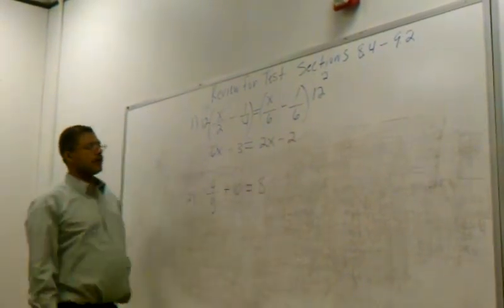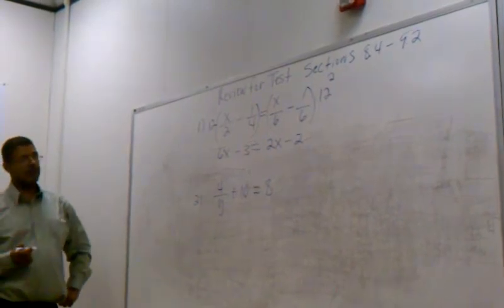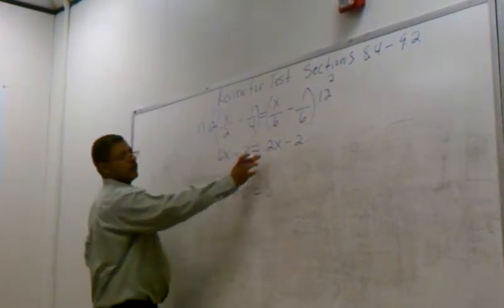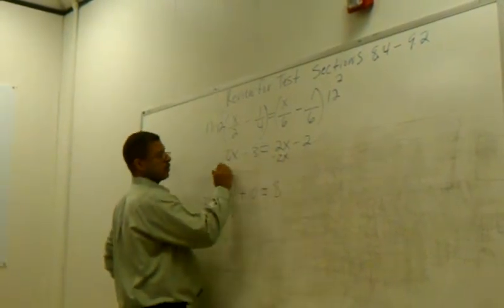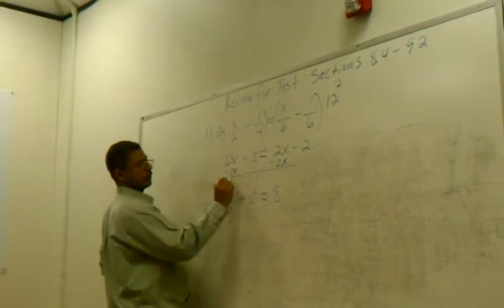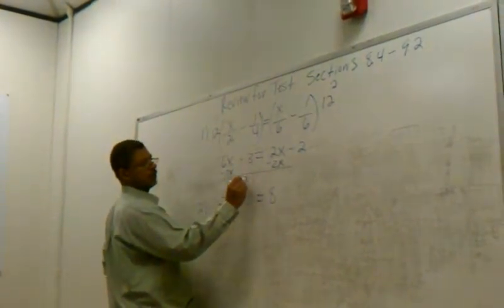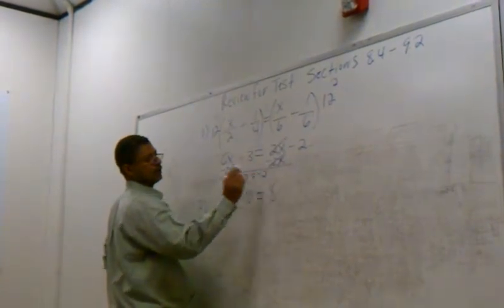Okay, now we're going to solve for X. So we need to combine the X's and the constants. I'm going to move this two X over here. When I subtract it over, I get what? Four X. Minus what? Three. Equals negative two.